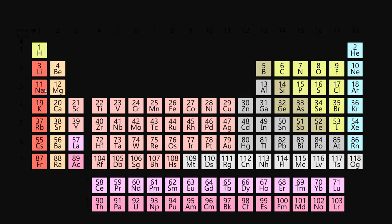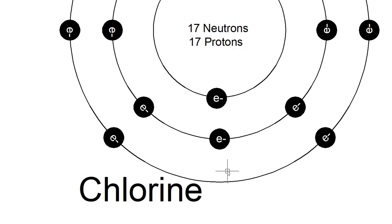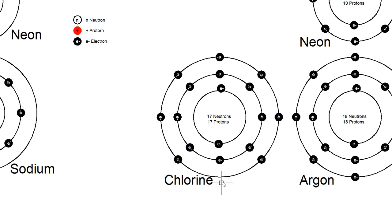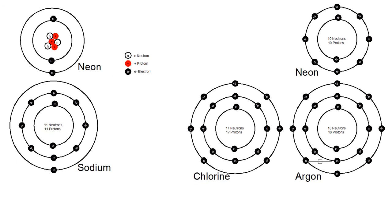Sodium has one extra electron on this side of the table. Way over on the other side, chlorine is almost ready to look like argon — it's almost at octet stability but missing one electron, and that makes chlorine feel a little self-conscious too, because it could be one of those noble gases on the right-hand side of the table.